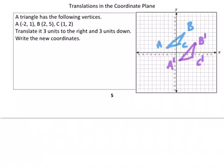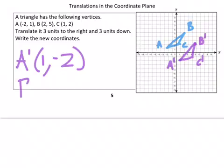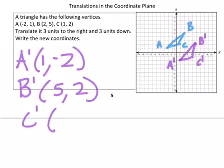So those are our new points. Now it says to write the new coordinates, so we're going to do that right now. We have A prime, and that is coordinate (1, -2). B prime is (5, 2). C prime is (4, -1).